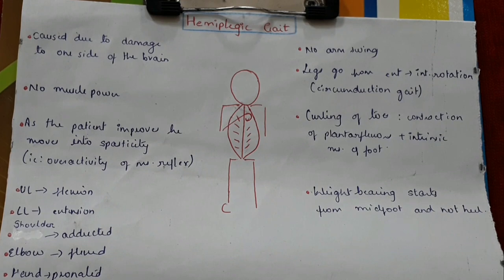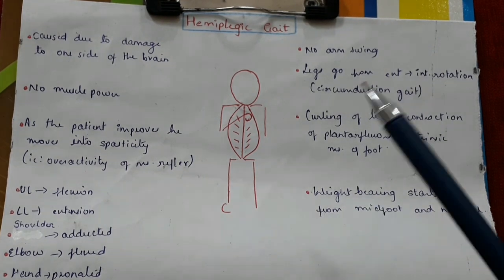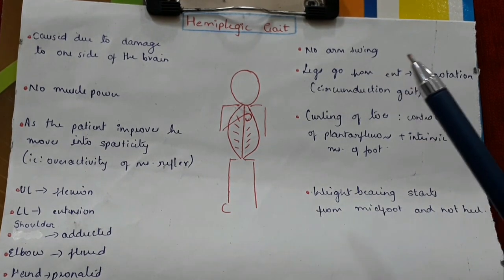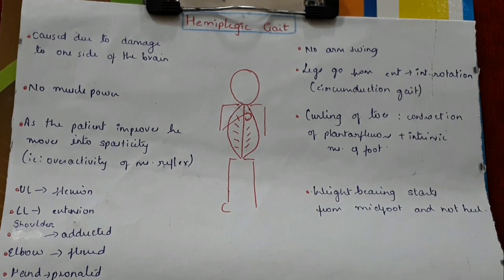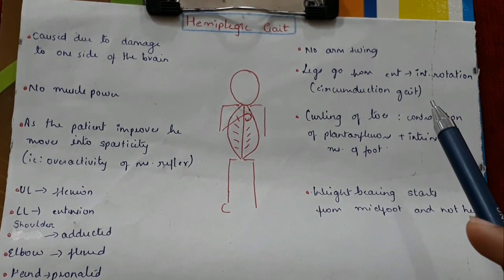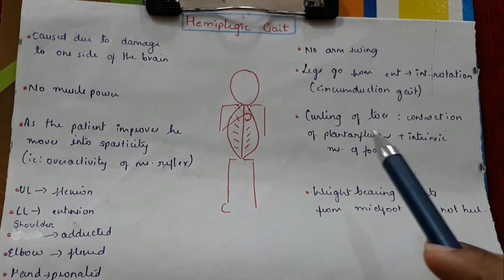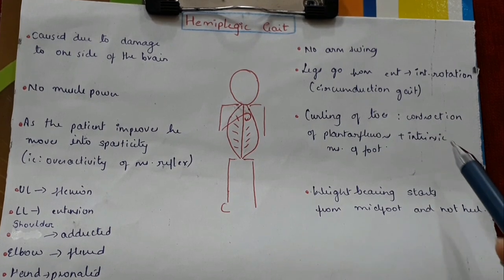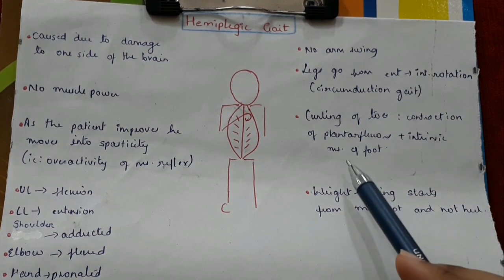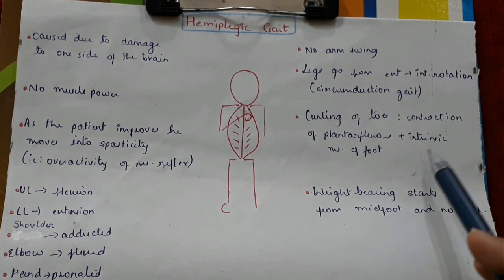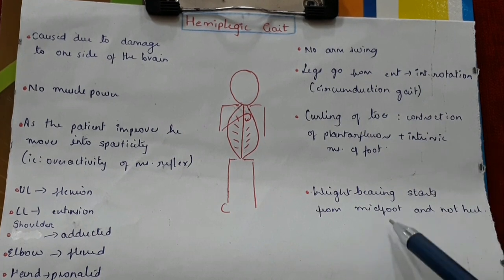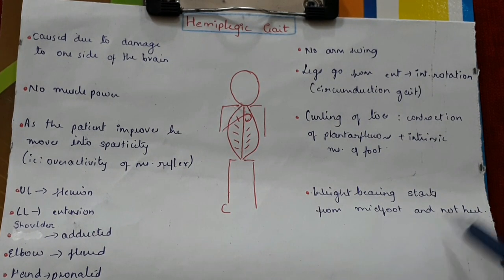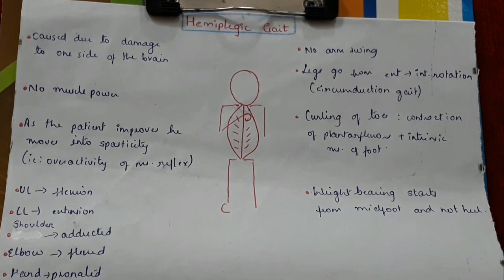The elbow is flexed, hands are pronated, and no arm swing is seen. The legs go from external to internal rotation — that is, circumduction gait. Curling of toes is present due to contraction of the plantar flexors and the intrinsic muscles of the foot. Weight bearing starts from the midfoot and not the heel.